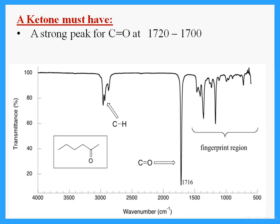A ketone has a C=O but no OH — the C=O is in the middle of the compound. So all you're looking for is a strong peak at around 1710 to 1720. If I have that peak only and no broad peak for OH at around 3000, then I have only a C=O. That means I have a ketone.